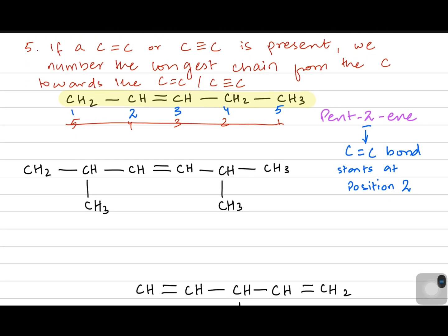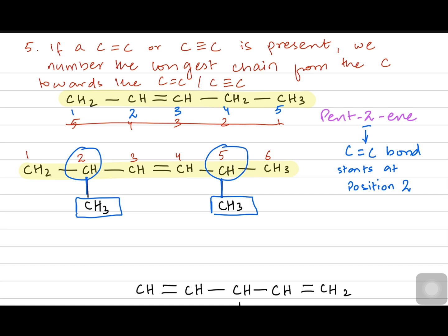The next structure is a six-carbon chain with a double bond in the center, so it doesn't matter whether you number from left or right. Numbering from the left: one, two, three, four, five, six. There's a methyl branch on carbon two and another methyl branch on carbon five. The name includes the branches first — two,five-dimethyl — then hex-3-ene, where the three indicates the carbon-carbon double bond begins on carbon three.